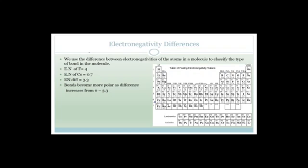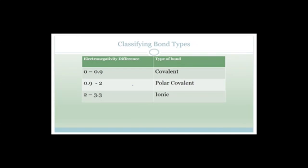We have perfectly nonpolar bonds if the electronegativity difference is 0, because then the electrons are going to be shared equally — the electrons aren't going to be more attracted to one atom than to the other. Whereas, if you've got something like fluorine and cesium — which don't actually bond, but let's pretend — fluorine is going to attract the electrons so strongly, and cesium is so weak at holding those electrons, that all the electrons go onto the fluorine. So it actually becomes a very polar molecule.